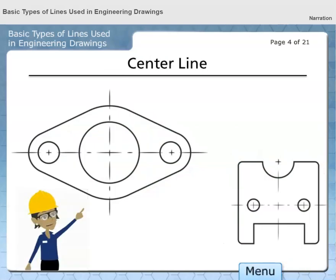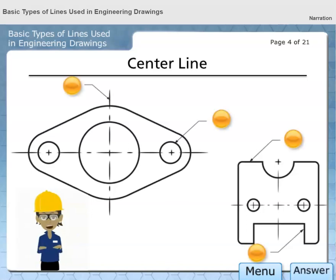Center lines are used to represent either the center of round or cylindrical features or the symmetry of a feature. These lines appear as thin width lines with alternating long and short dashes. Select the button that best represents a center line.